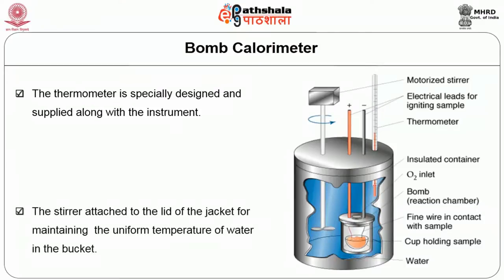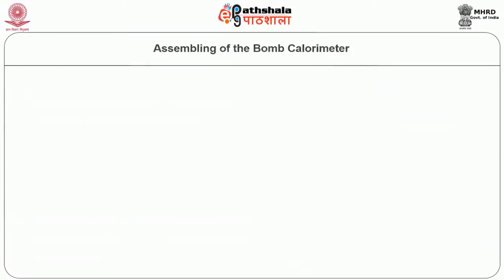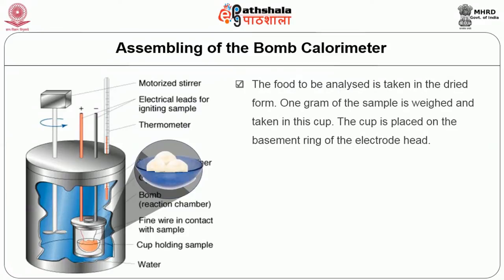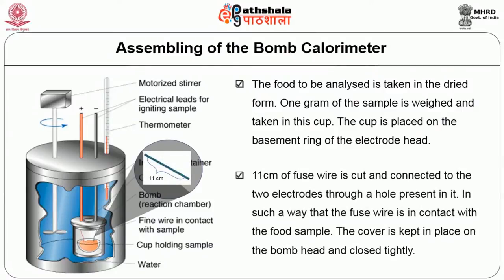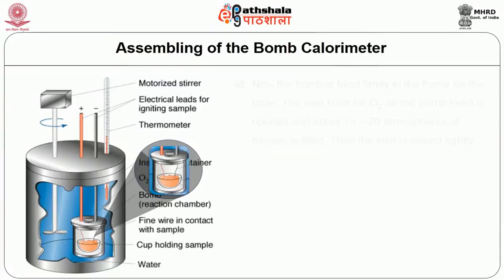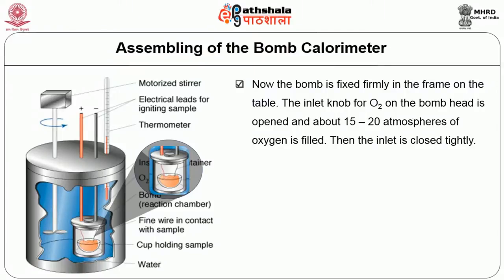Assembling of the bomb: the food to be analyzed is taken in dried form. One gram of the sample is weighed and placed in the sample cup. The cup is placed on the base of the electrode head. 11 cm of fuse wire is cut and connected to the electrode through a hole in such a way that the fuse wire is in contact with the food sample. The cover is placed on the bomb head and closed tightly, and the bomb is fixed firmly in the frame on the table.